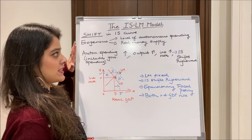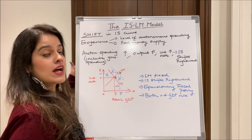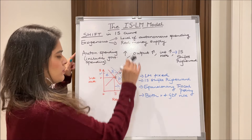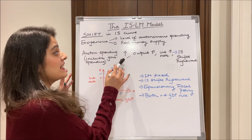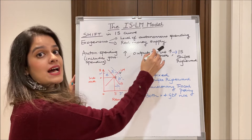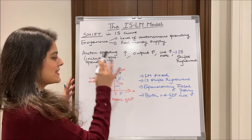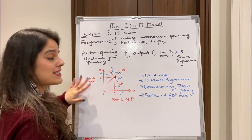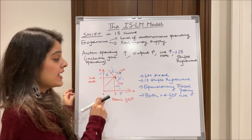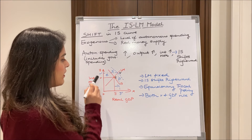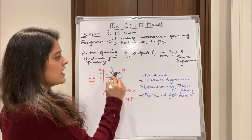Two exogenous factors — the level of autonomous spending and the real money supply — affect the IS and LM curves. For the shift in the IS curve: when autonomous spending, such as government spending, increases, output and interest rates increase as well, leading to a rightward shift of the IS curve. Diagrammatically, we have real GDP on the x-axis and interest rate on the y-axis. Initially, the IS and LM curves intersect at point E, with r as the interest rate and y as real GDP.